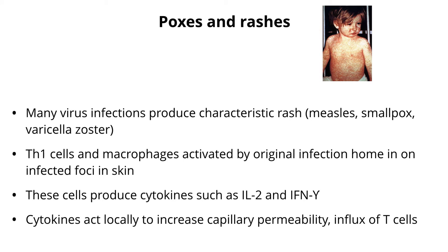Other things viruses do are poxes and rashes on the skin — these are typically immunopathological reactions. A child with measles shows all those dots from virus interacting with immune cells. Measles, smallpox, varicella zoster, and herpes viruses all cause rashes, typically caused by CD4-positive TH1 cells and macrophages homing in on infected foci on the skin. They produce cytokines that increase the permeability of capillaries; T cells move into the area and you get swelling, a pox or a rash.